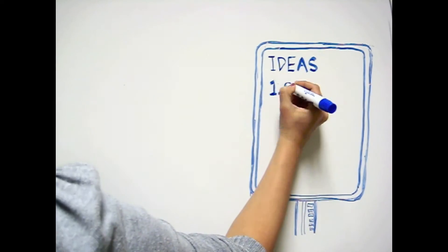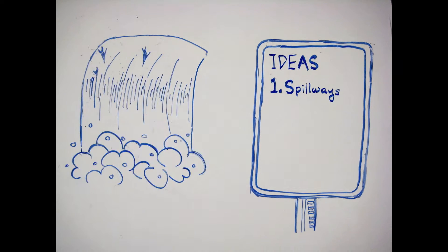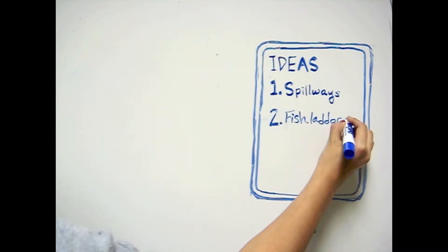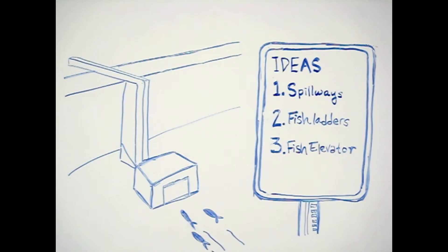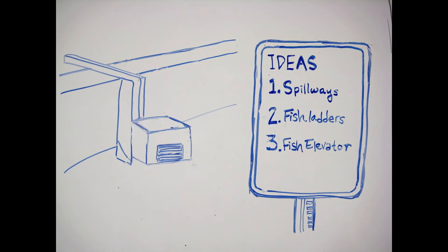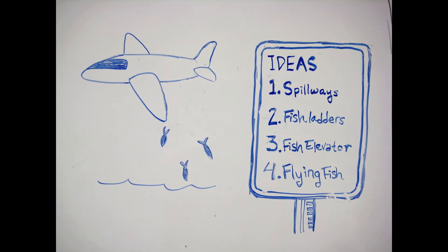A number of strategies have been undertaken, including spillways, where fish are dumped over the sides of the dams, fish ladders, where they can climb or descend steps on a ladder, fish elevators, where they are lifted up or downwards, and once in an experiment in the Columbia Rivers, they were dropped downstream by an airplane.